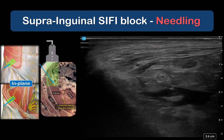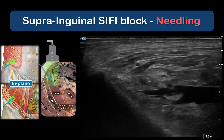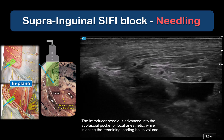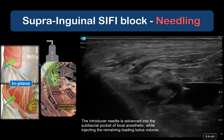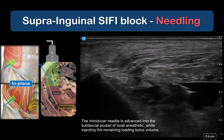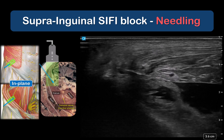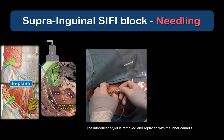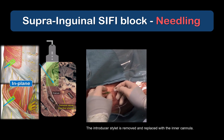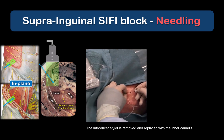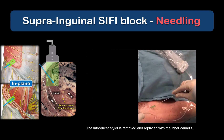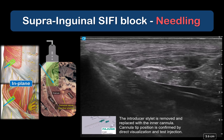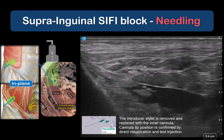The in-plane view allows more precise placement of the needle tip in the subfascial plane, and more importantly, facilitates accurate advancement of the introducer needle into the subfascial compartment under fascia iliaca as the loading bolus injection is completed. The introducer stylet is withdrawn and replaced with the inner cannula of the ECATH. Scanning confirms placement of the cannula under fascia iliaca and spread of local anesthetic injected through the cannula.